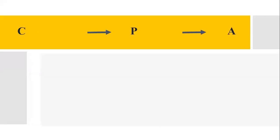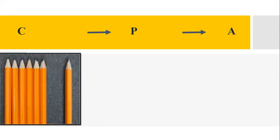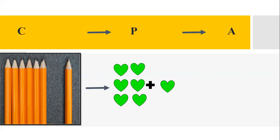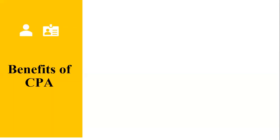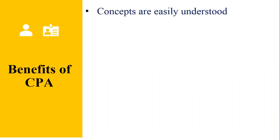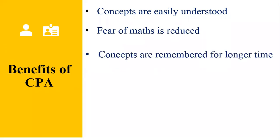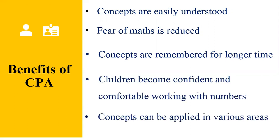In this manner, the CPA approach helps in strengthening the understanding of concepts — from tangible physical objects which children can touch, to pictorial representations that they can see, to finally numbers and mathematical symbols that they can work with. Although CPA has three distinct stages, teachers need to go back and forth between them to reinforce and explain concepts. Using the CPA approach helps students understand concepts easily. As many children have a fear of maths, this approach makes them more comfortable and confident in working with numbers. It makes children remember concepts for a long time and helps them apply these concepts in their overlapping areas.